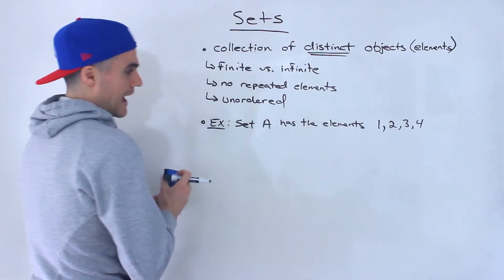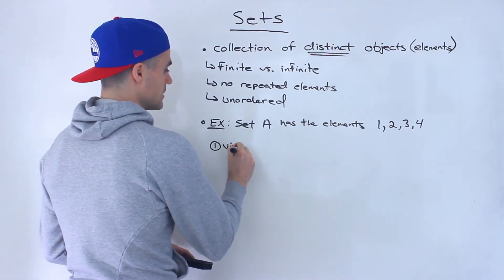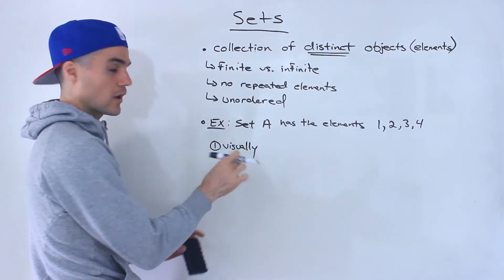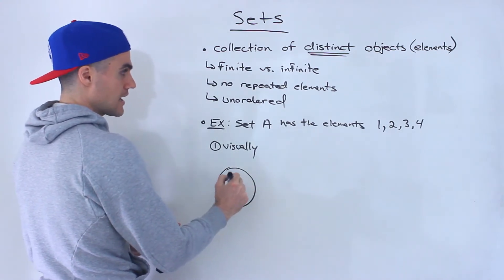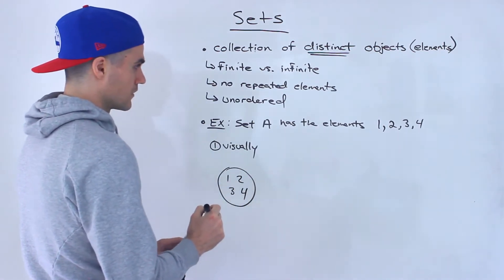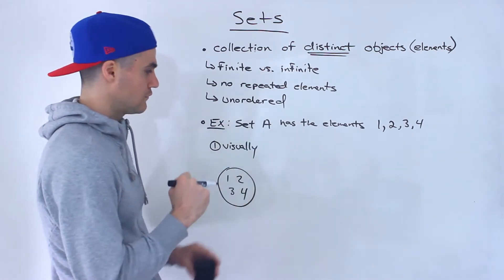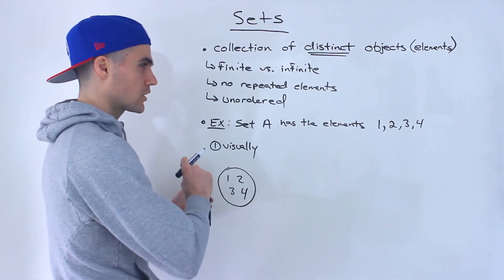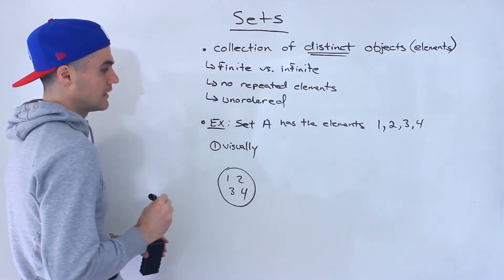Another thing to go over is how sets can be represented. The first way is visually — you draw a circle for the set and list the elements within the circle. This works well with finite sets. When you start working with larger sets or infinite sets, representing them visually gets a little tougher.